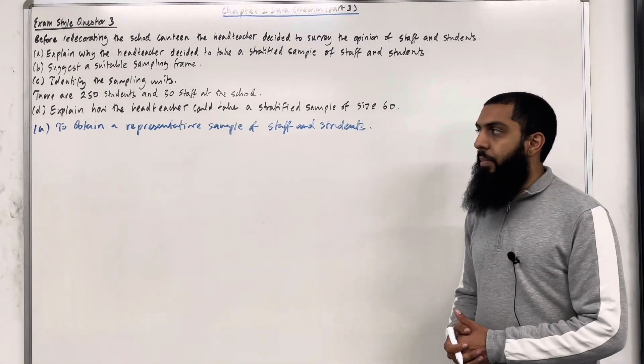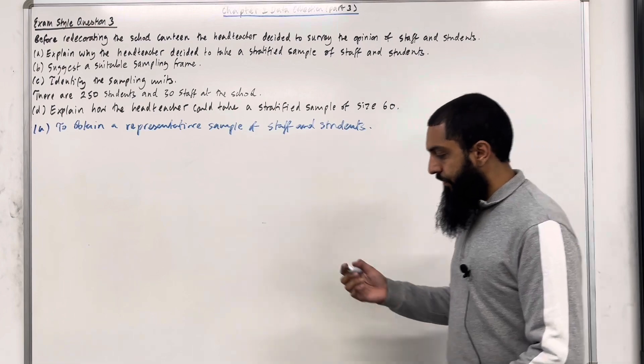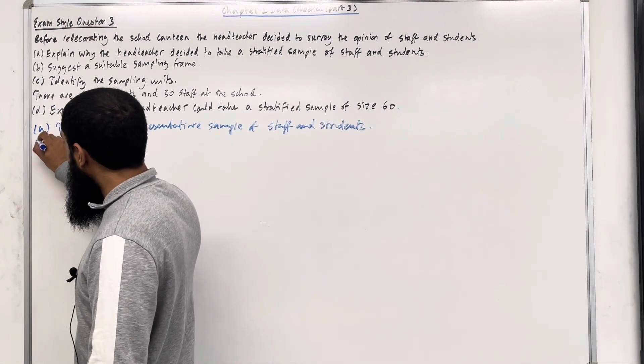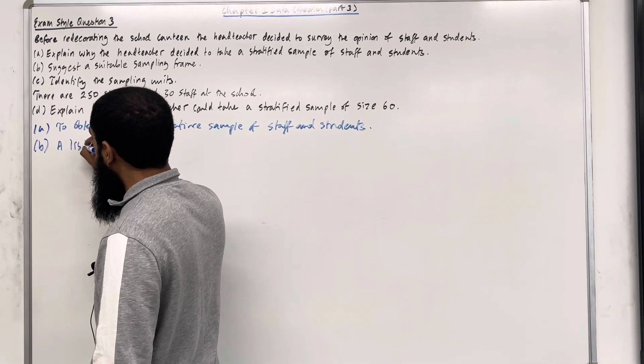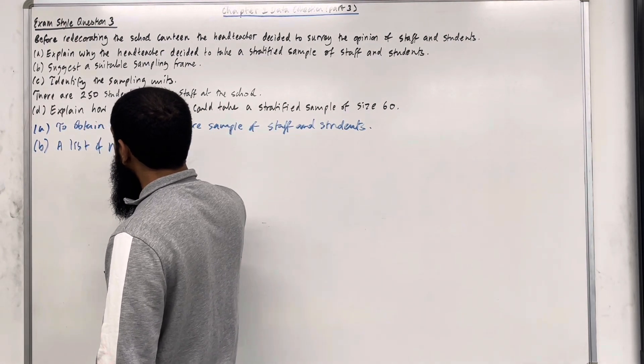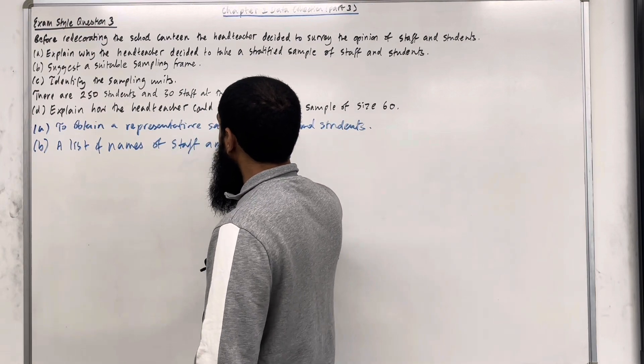Moving on to part B: Suggest a suitable sampling frame. So in part B, the sampling frame for this scenario would be a list of names of staff and students.